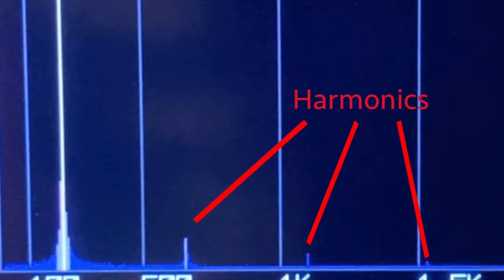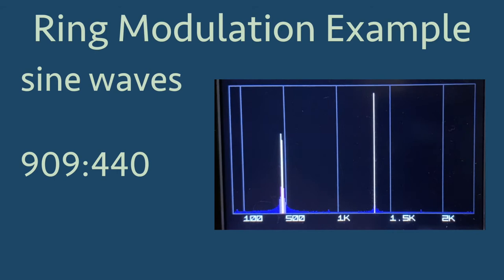Let's listen to some examples. First, the carrier and modulator are sine waves, but they are not harmonically related. So I've set the carrier to 440 Hz and the modulator to 909 Hz.